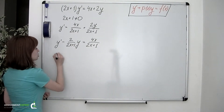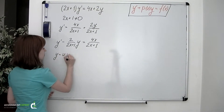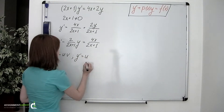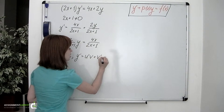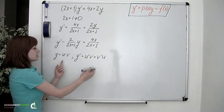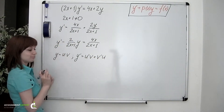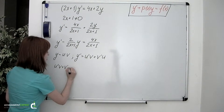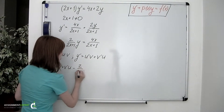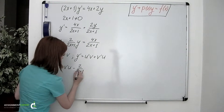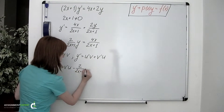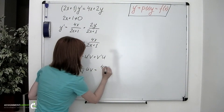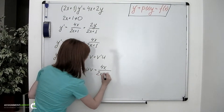Let's now make a substitution: y = u · v. We also remember that the derivative of a product is y' = u'v + v'u. Let's substitute these expressions into our equation. So we'll have u'v + v'u - 2/(2x+1) · u · v = 4x/(2x+1).